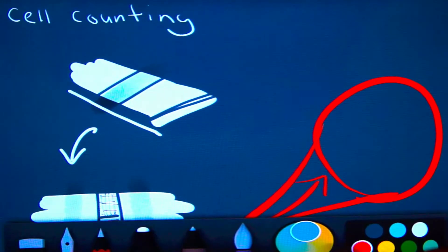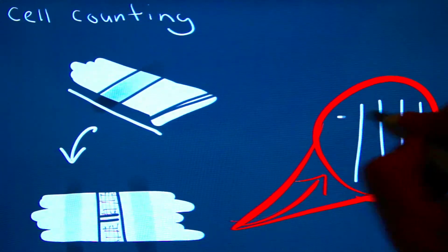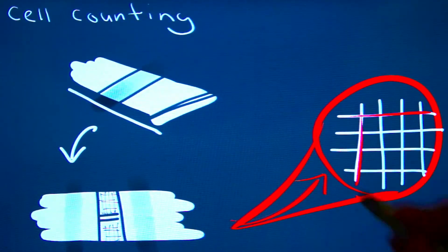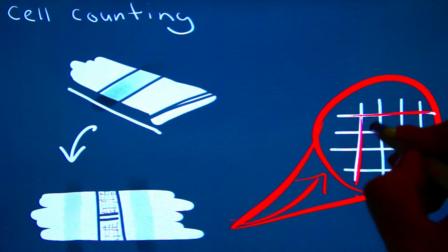Cells in suspension are introduced into this area and are then counted. The number of cells in the chamber can then be used to determine the concentration of the sample.